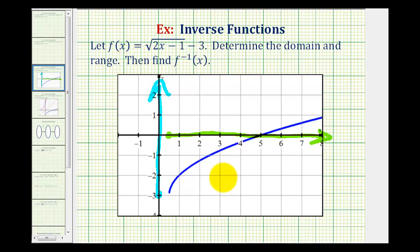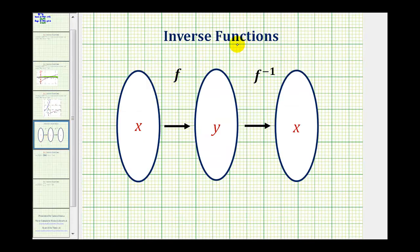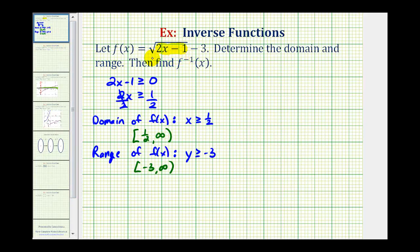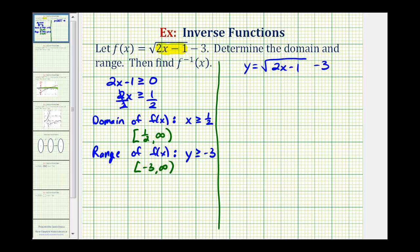Now let's find the inverse of f of x. Inverse functions undo each other — if function f has an input of x and an output of y, that y becomes the input into the inverse function, which returns the original value of x. The process is to write the function in terms of x and y, then interchange the x and y variables. So we write y equals the square root of the quantity two x minus one, minus three, and the inverse equation becomes x equals the square root of the quantity two y minus one, minus three.